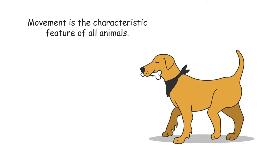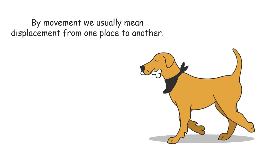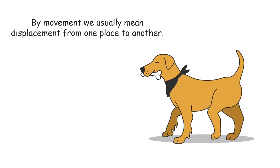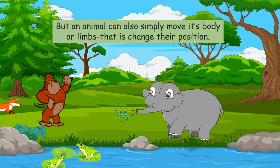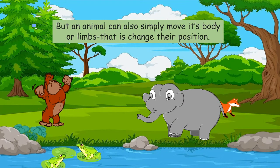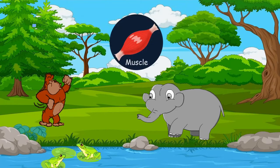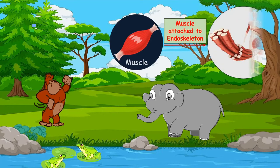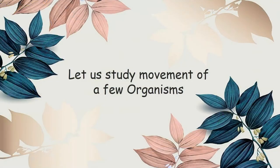Movement is the characteristic feature of all animals. By movement we usually mean displacement from one place to another, but an animal can also simply move its body or limbs — that is, change their position. A large number of animals move around using their limbs, and the limbs are moved by muscles. The muscles are attached to either the endoskeleton or the exoskeleton. Let us study movement of a few organisms.